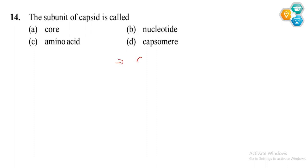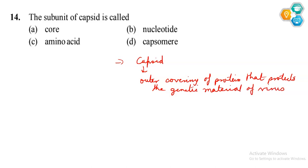Let's see. Capsid is basically the outer covering of protein that protects the genetic material of virus. So the genetic material is protected and we call it capsid. In the virus, it is such a structure.